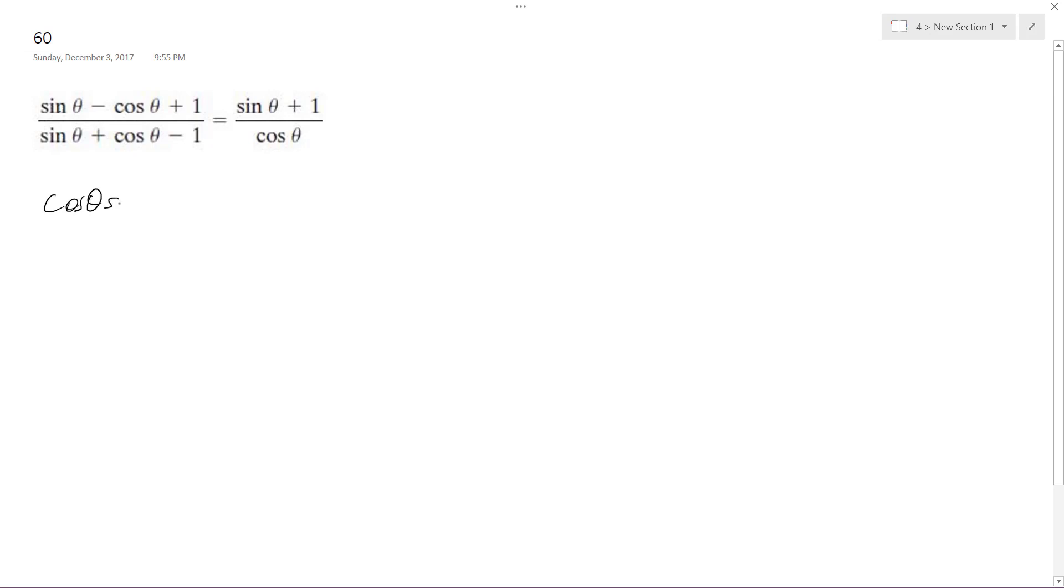So cosine theta, sine theta, minus cosine squared theta, plus cosine theta, and then bottom left, top right, I get sine squared theta, plus cosine theta, sine theta.